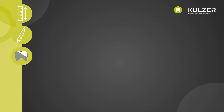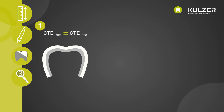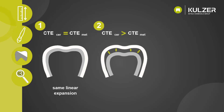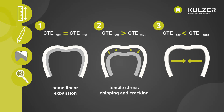Let's summarize the three scenarios once again. First, the CTE of the ceramic and the metal alloy is the same — both materials have the same strength. Second, the CTE of the ceramic is higher than that of the metal alloy — this leads to tensile stress and results in chipping and cracking of the ceramic. Third, the CTE of the ceramic is smaller than that of the metal alloy — this leads to compressive stress, and cracks do not occur because stability is provided by the compressive and flexural strength of the ceramic.